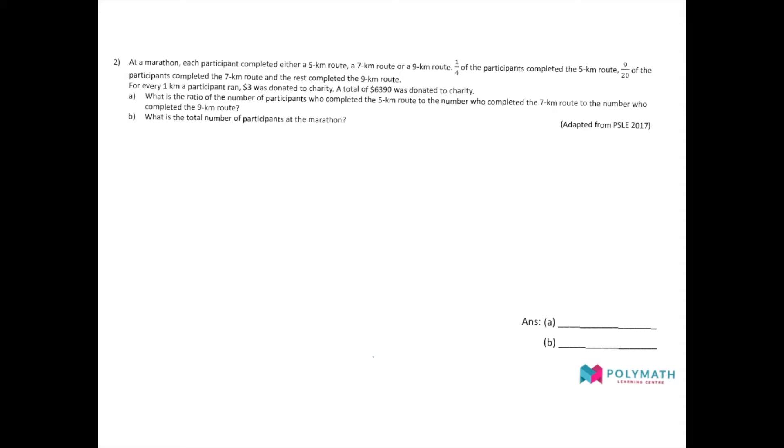First and foremost, we are given several proportions. A quarter and 9 over 20 representing the 5km route and the 7km route. So one quarter of the participants completed the 5km route, and the 7km route is represented by the fraction 9 over 20. So now, we can see a problem here.